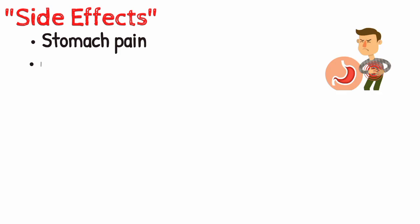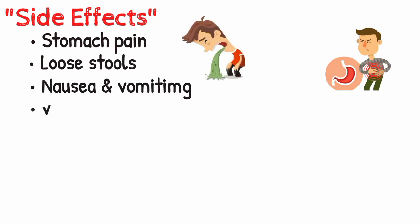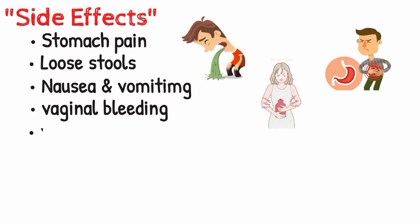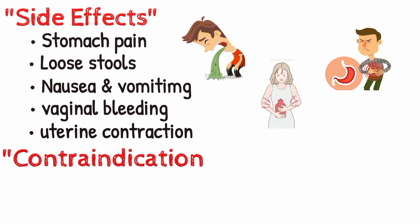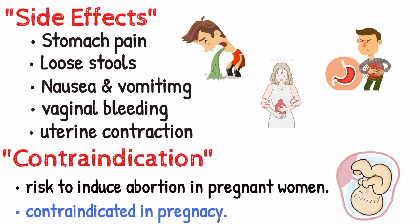Common side effects of misoprostol include stomach pain, loose stools, nausea and vomiting, vaginal bleeding, and uterine contractions. Misoprostol has the potential risk of inducing abortion in pregnant women, so this drug is contraindicated in pregnancy.